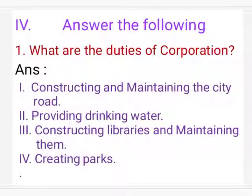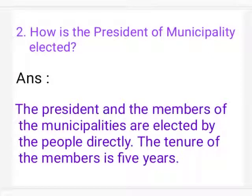Answer the following. First question: What are the duties of Corporation? First: constructing and maintaining the city roads. Second: providing drinking water. Third: constructing and maintaining libraries. Fourth: creating parks. Second question: How is the President of Municipality elected? The President and the members of the Municipalities are elected by the people directly. The tenure of the members is 5 years.